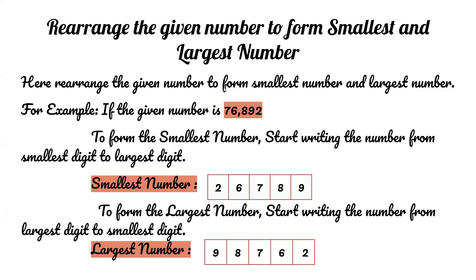Rearrange the given number to form smallest number and largest number. For example, if the given number is 76,892, to form the smallest number, start writing the number from smallest digit to largest digit.